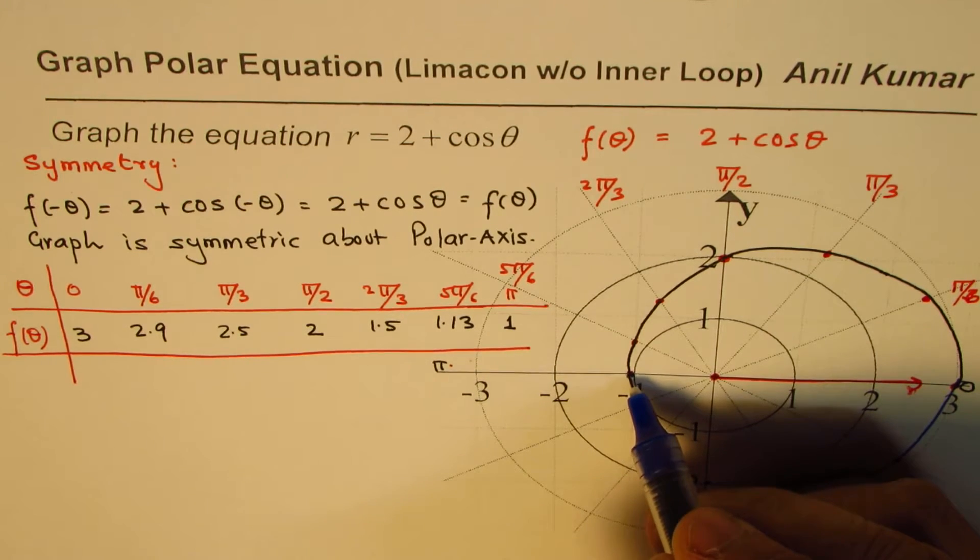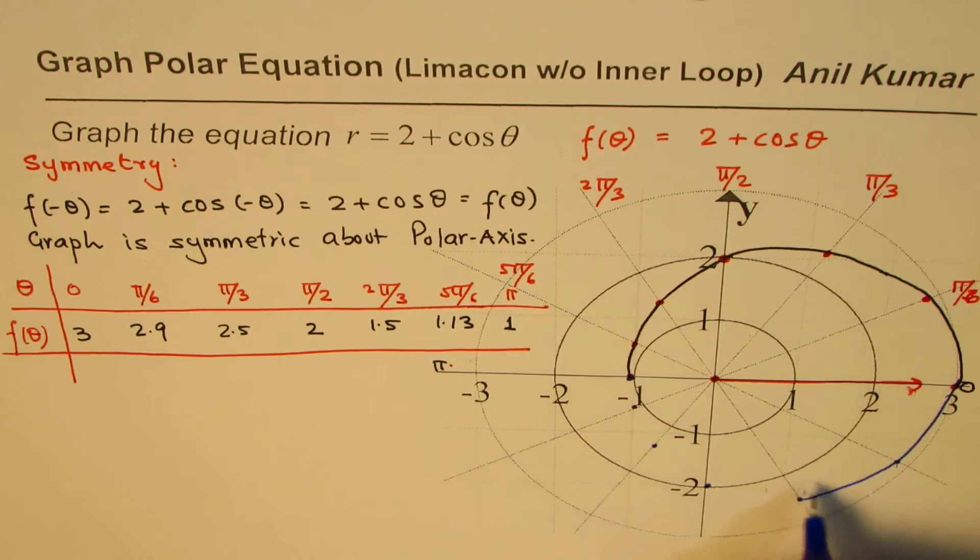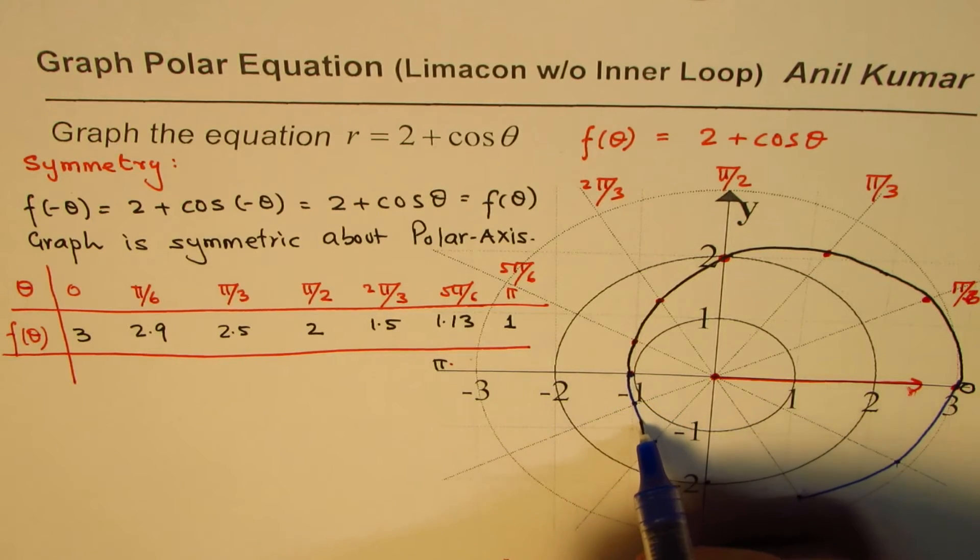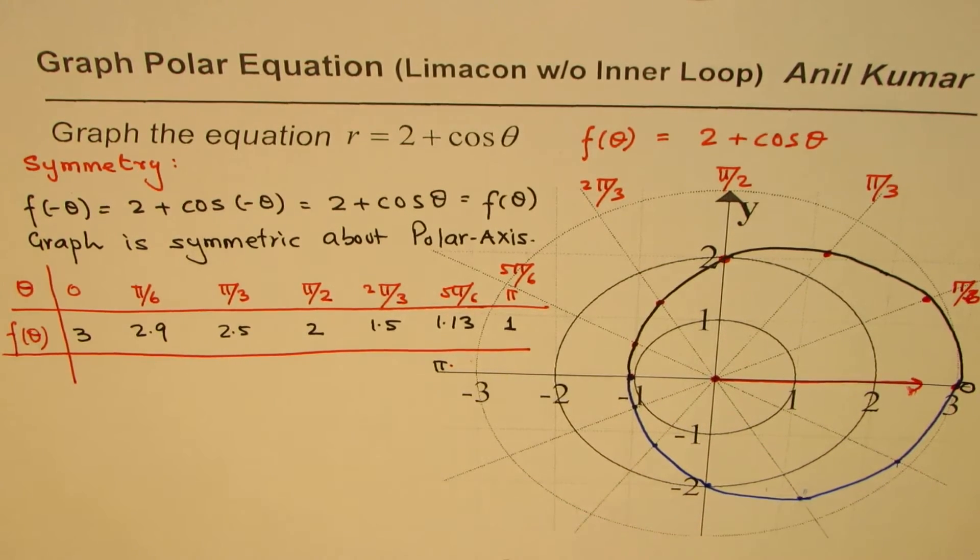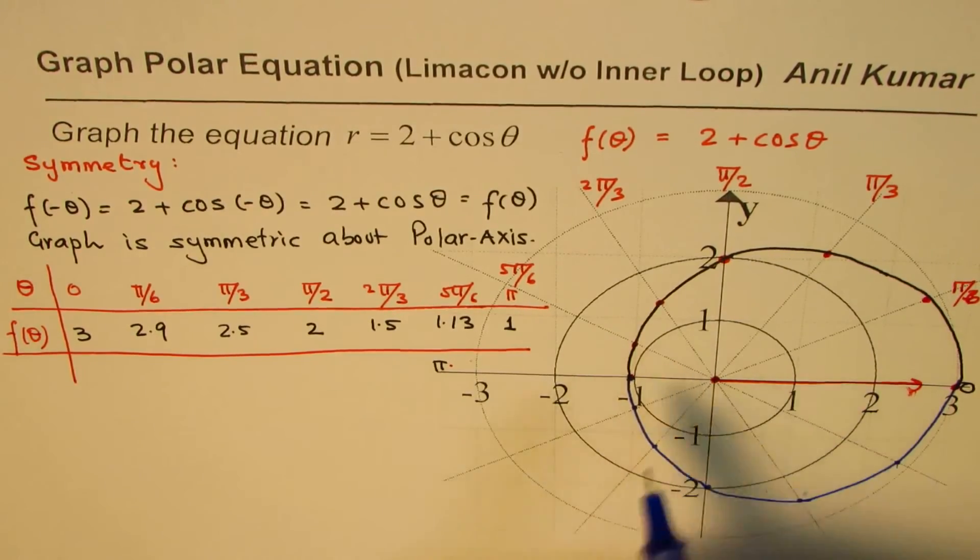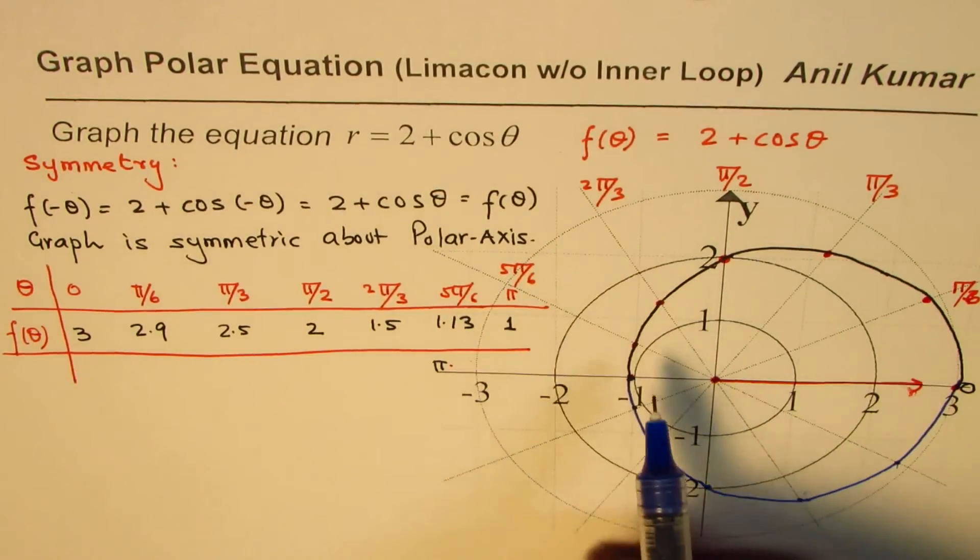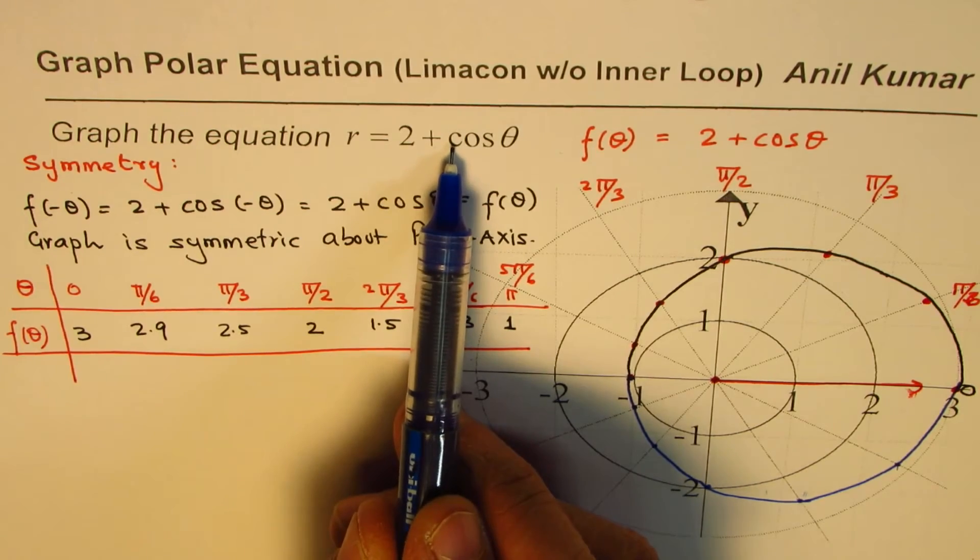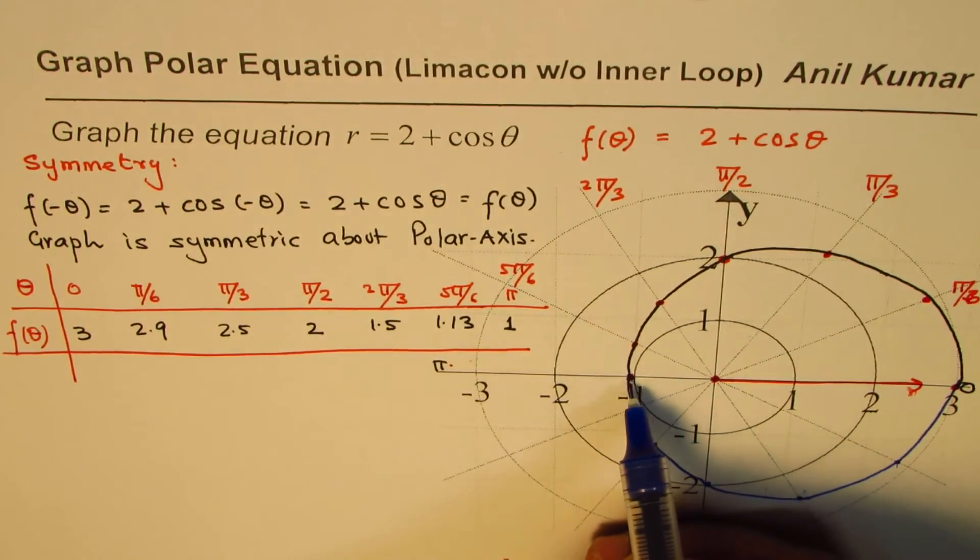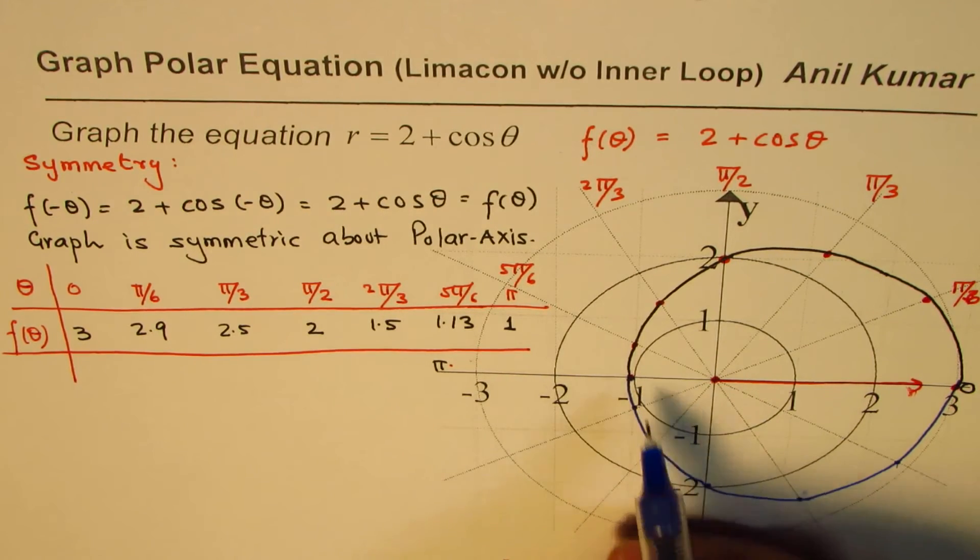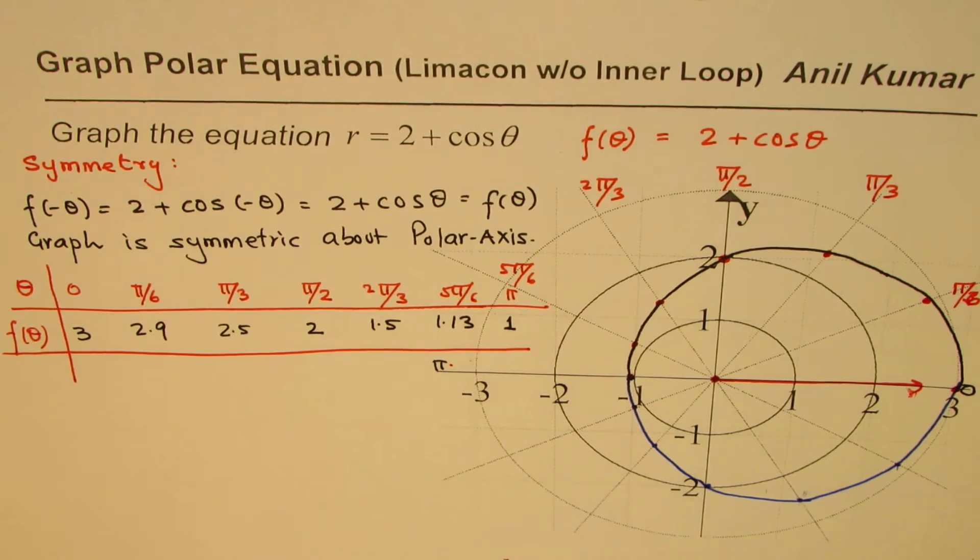So we have this kind of a function here. That is how you get a shape. It is without inner loop. You saw that if the coefficient of cos is higher than this value, then we got something in the center. There is no inner loop in this particular graph. And that is how you get the graph of this function, r equals 2 plus cosine theta.